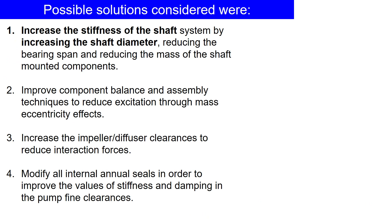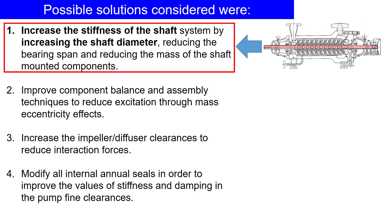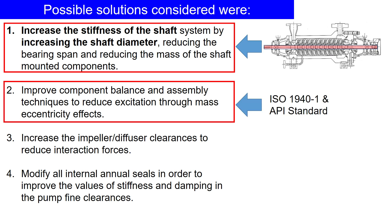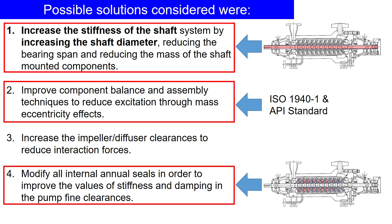To solve this issue, engineers considered four possible solutions. One approach was to increase the stiffness of the shaft, but this could be difficult if the design was already set. Another solution was to improve the balance of the components, but this might not be enough to mitigate the destabilizing forces. Also, modifying the annular seal was considered as a way to reduce the destabilizing forces.